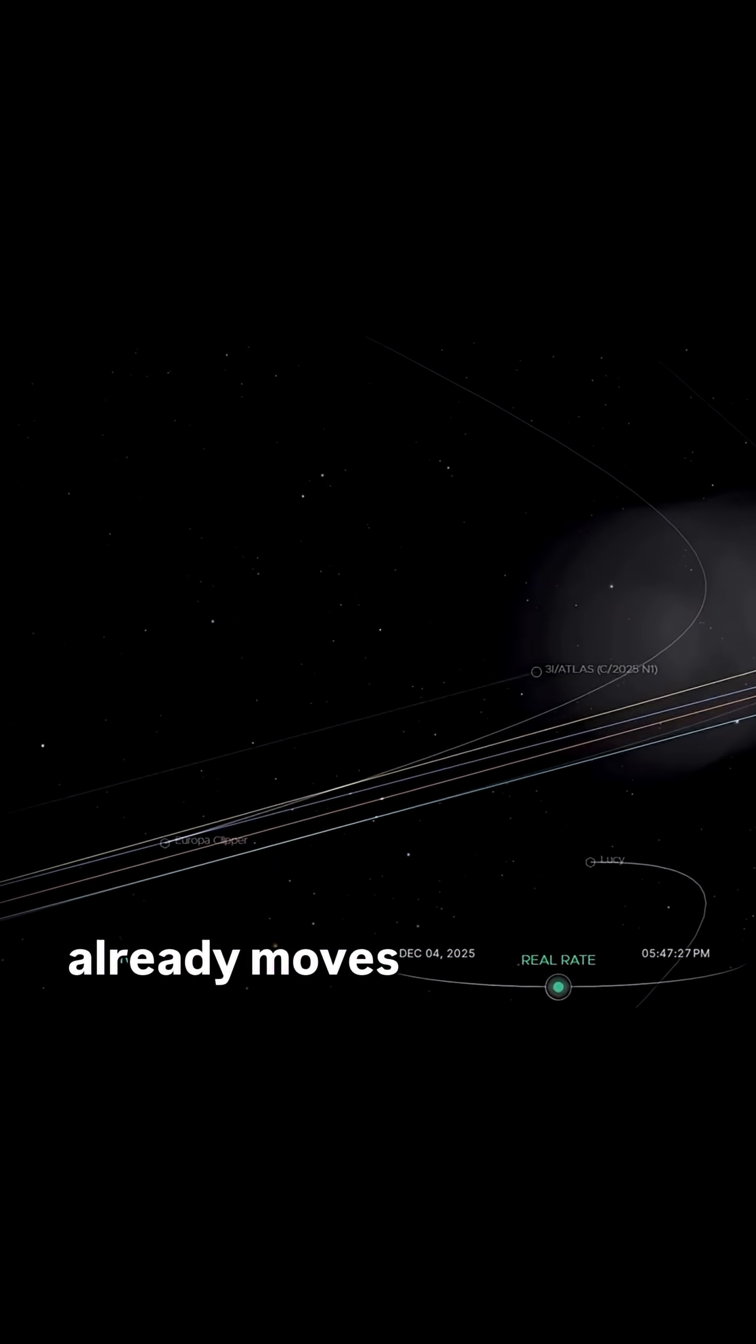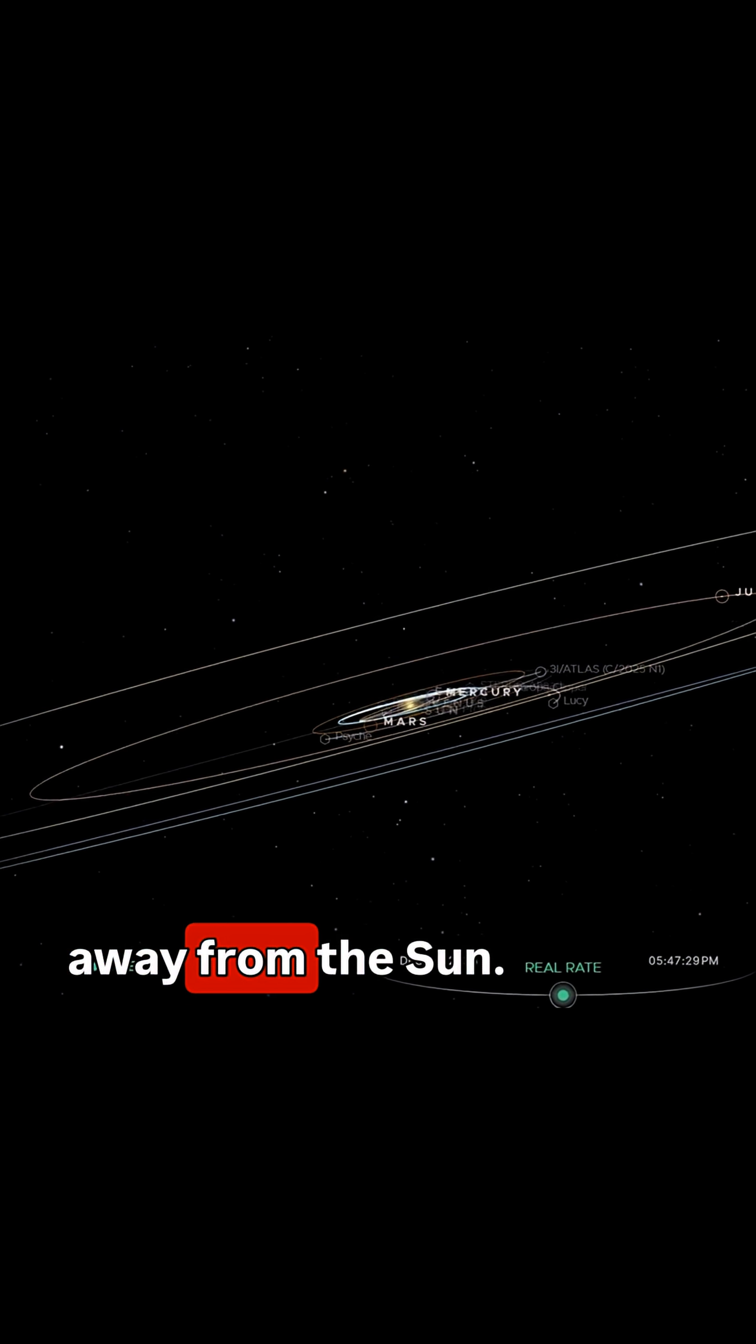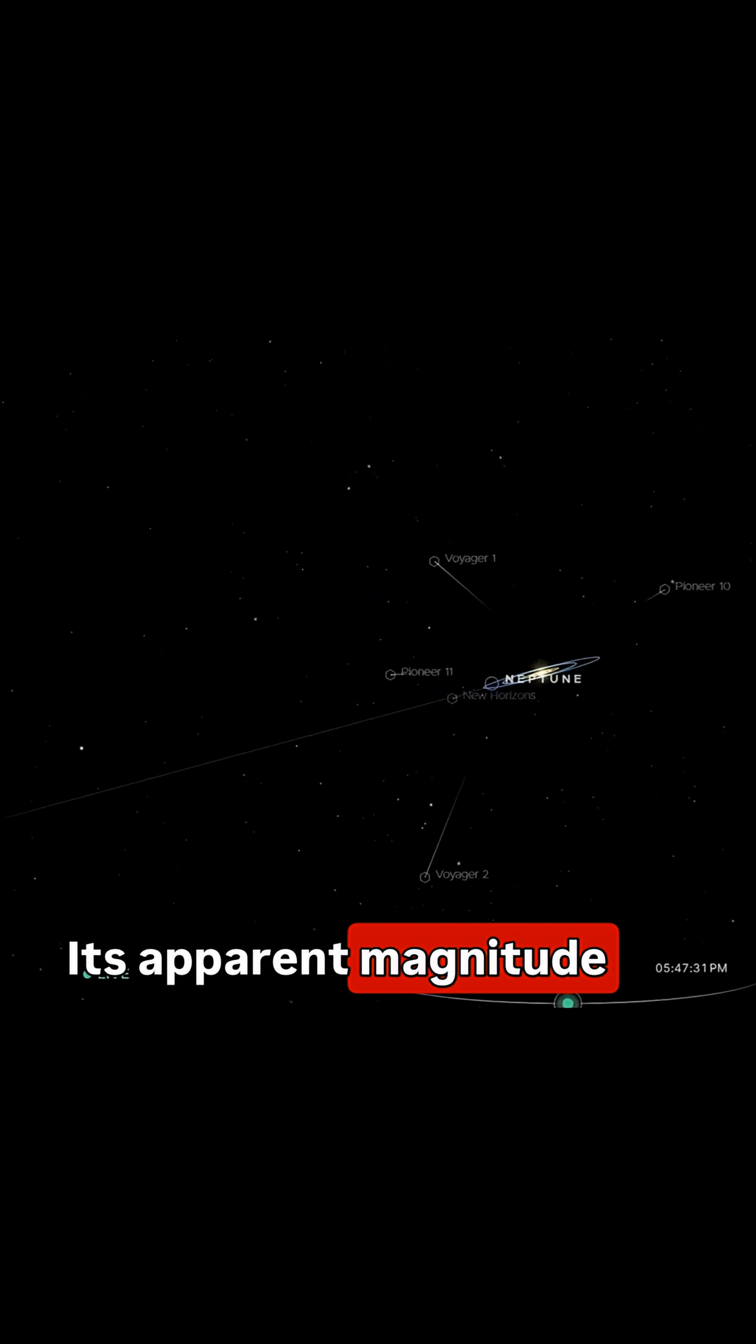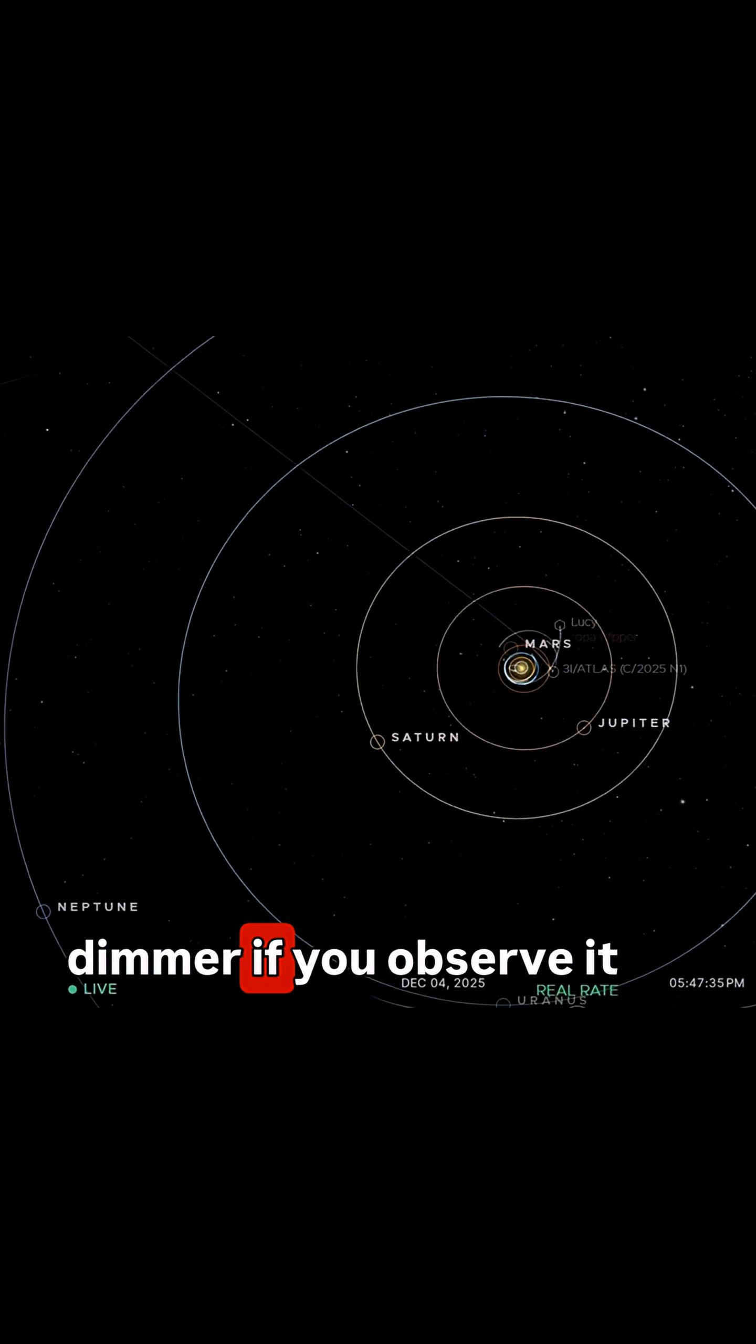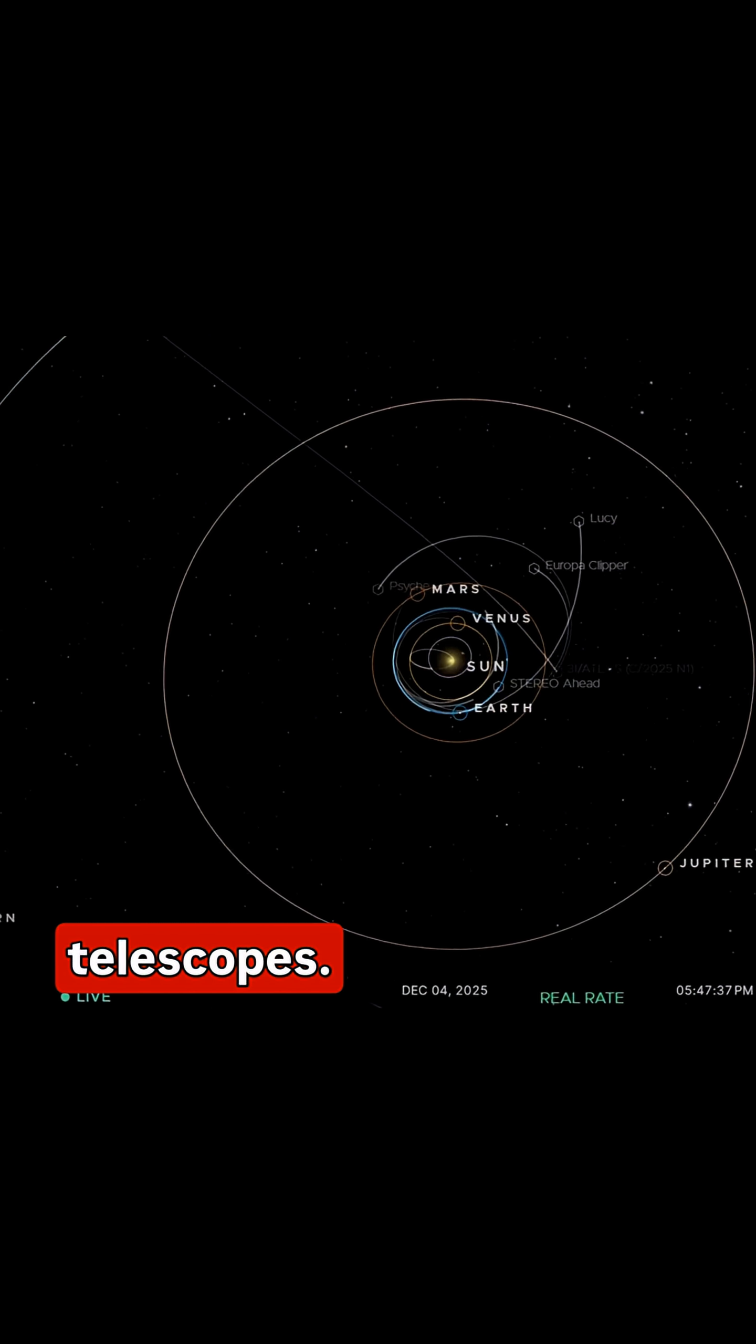Right now, 3I Atlas already moves away from the Sun. Its apparent magnitude keeps growing and as a result, the comet will look dimmer if you observe it with ground-based telescopes.